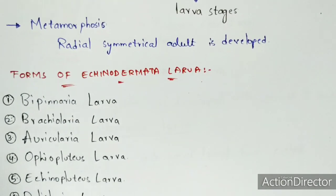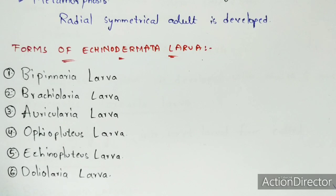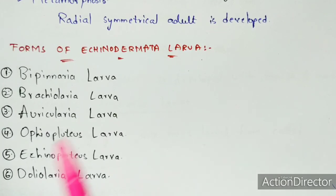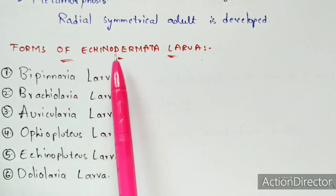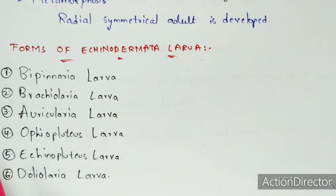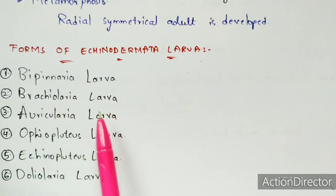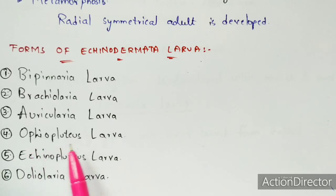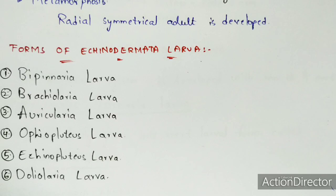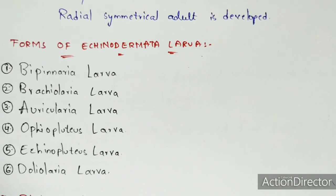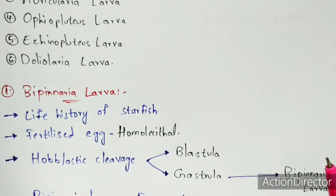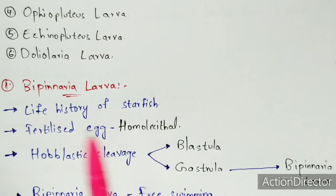There are six forms of Echinodermata larvae: first, bipinnaria larva; second, brachiolaria larva; third, auricularia larva; fourth, ophiopluteus larva; fifth, echinopluteus larva; and sixth, doliolaria larva.